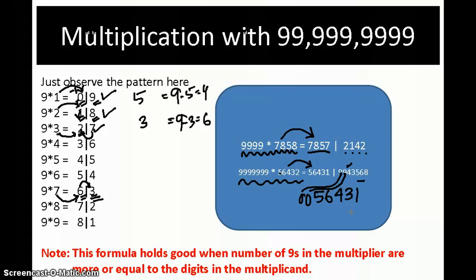This technique has a limitation. The limitation goes like this: this formula holds good when the number of 9s in the multiplier are more than or equal to the digits in the multiplicand. That means, in simple terms, I cannot, using this formula, say how much will be 99 into 353. I cannot say, because here the number of digits are 3 and number of 9s are 2. But the other way is possible. Here we have 7 digits here and 5 digits here, which is possible, but this case is not possible.